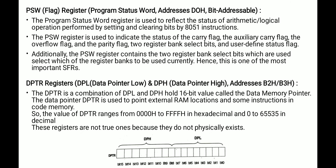Next is the PSW register — Program Status Word. Its address is D0H and it is also a bit addressable register. The PSW register is used to reflect the status of arithmetic and logical operations performed by the 8051 instruction. It indicates the status of the carry flag, auxiliary carry flag, overflow flag, and parity flag, along with two register bank select bits and a user-defined status flag. This is one of the most important Special Function Registers (SFR).